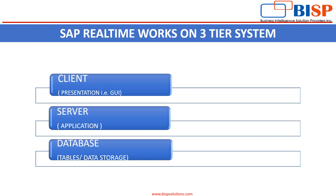The next part is the server. Server is the application layer — it is basically the host where all the programming is framed or done. Then comes the database. Database is a storage bank — tables and data storage. The interesting fact is that in SAP ECC, the legacy system of SAP S4 HANA, there was no built-in database, meaning it was dependent on other vendors like Oracle or IBM for its database. But now SAP has its own database — that is SAP HANA.